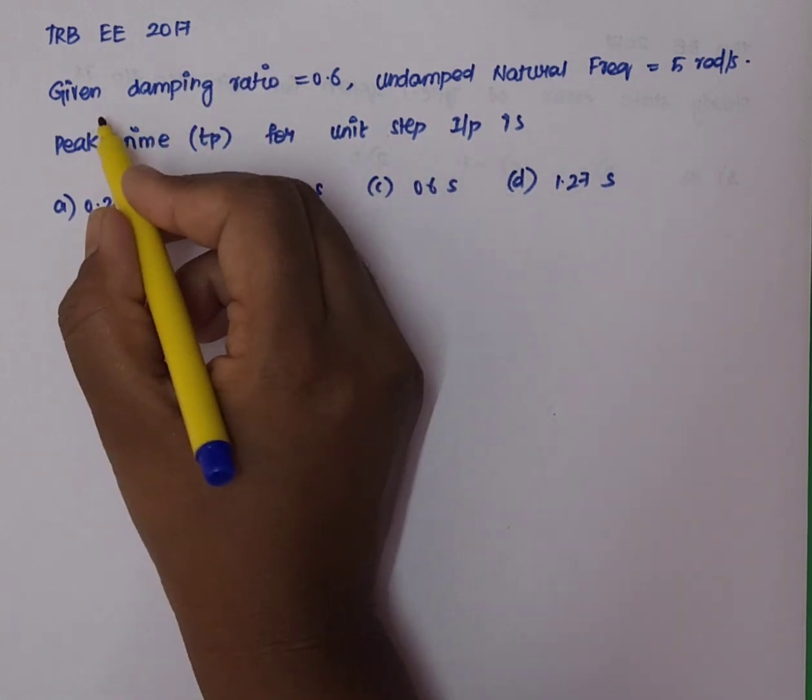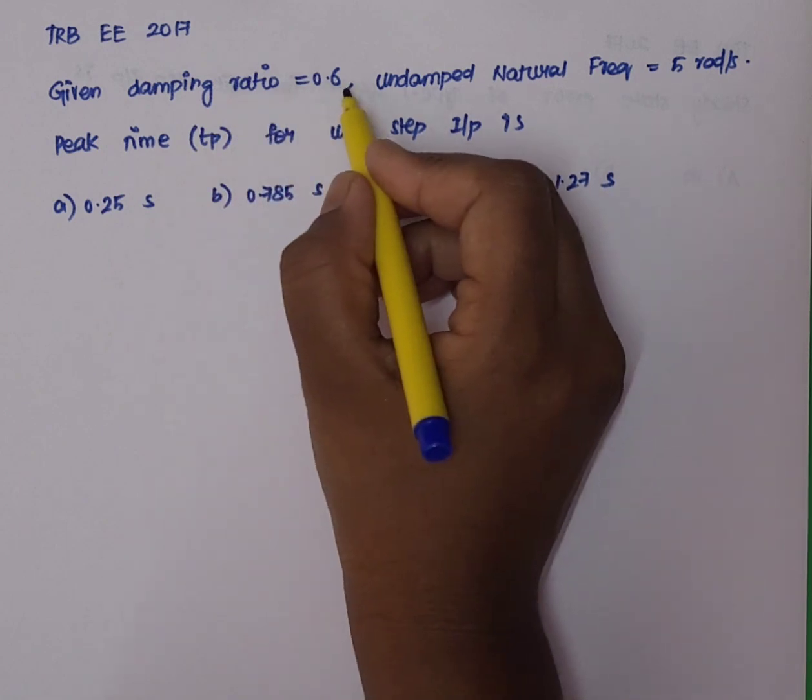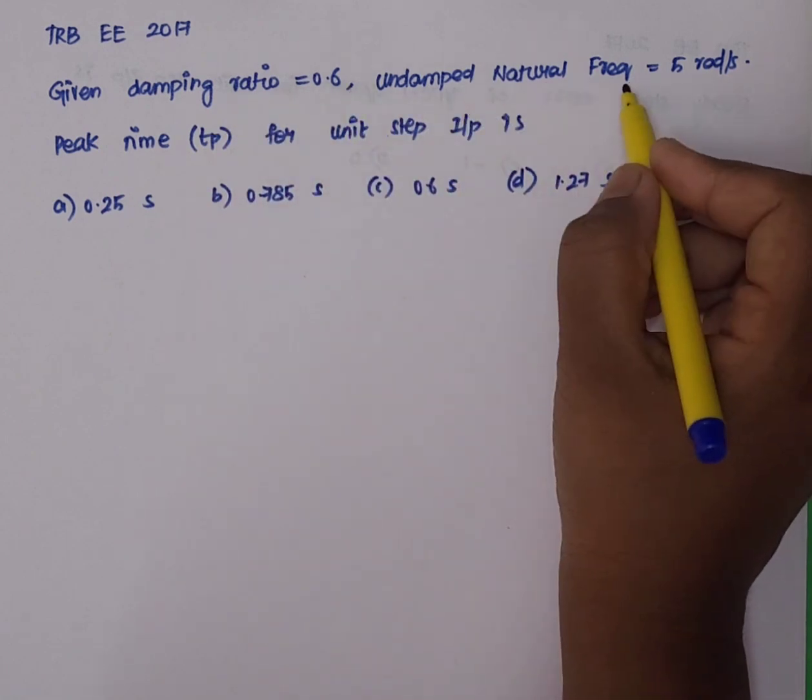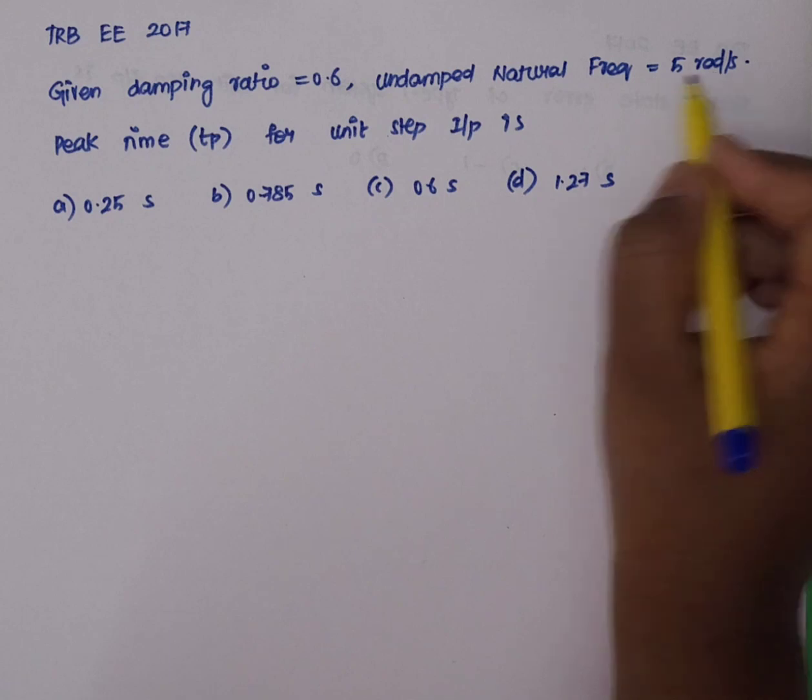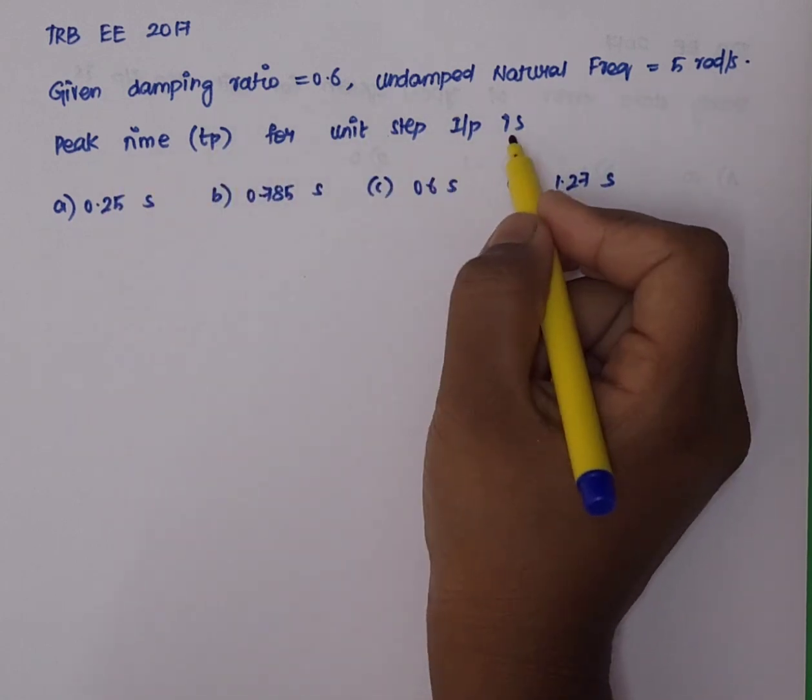So, what is the question? Given damping ratio is equal to 0.6, undamped natural frequency is equal to 5 radians per second, the peak time TP for unit step input is.